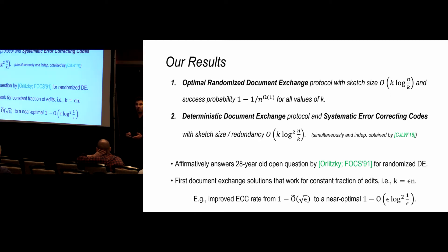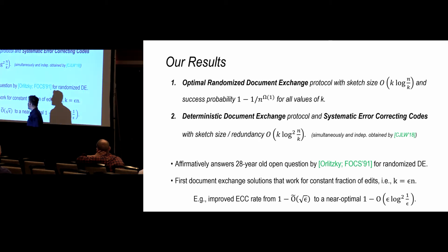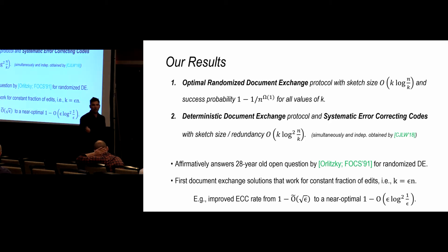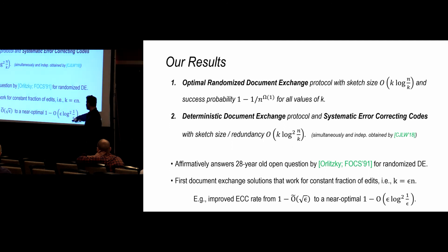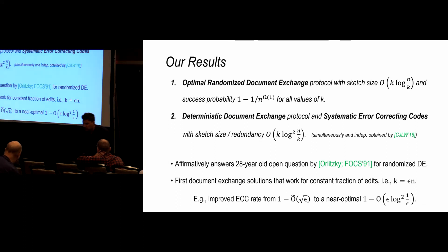All previous solutions essentially sent the whole document in that regime. Now if, say, 0.1% of your document has changed, you send something of order 0.1% times a small constant. For non-systematic error-correcting codes for insertions and deletions, the best rate was 1 − sqrt(epsilon) for small epsilon fraction corrupted; now we are at epsilon log²(1/epsilon), which is just a log(1/epsilon) factor away from the entropy bound.